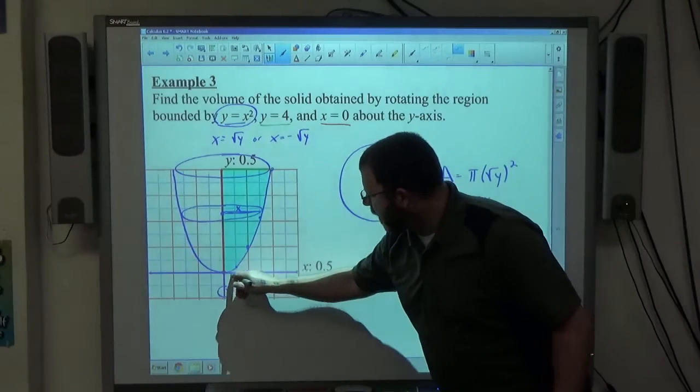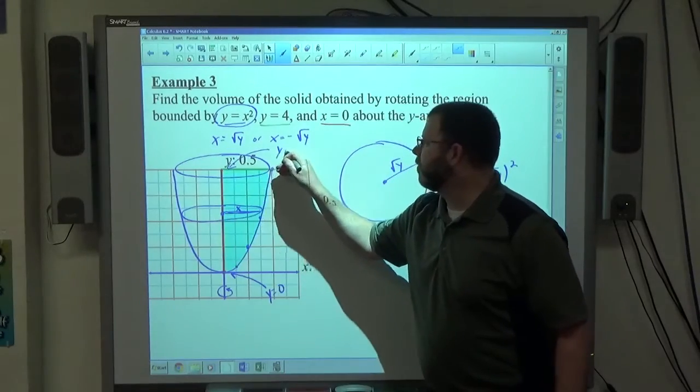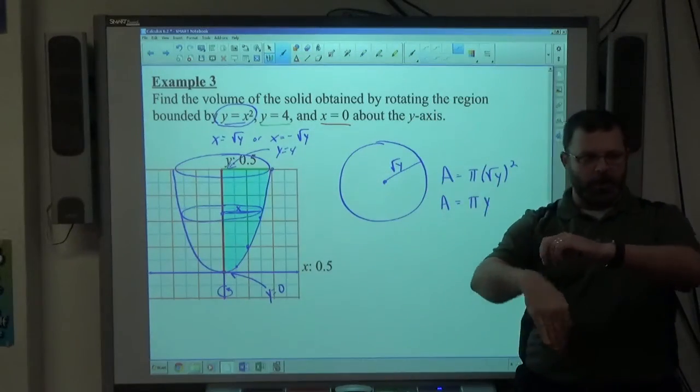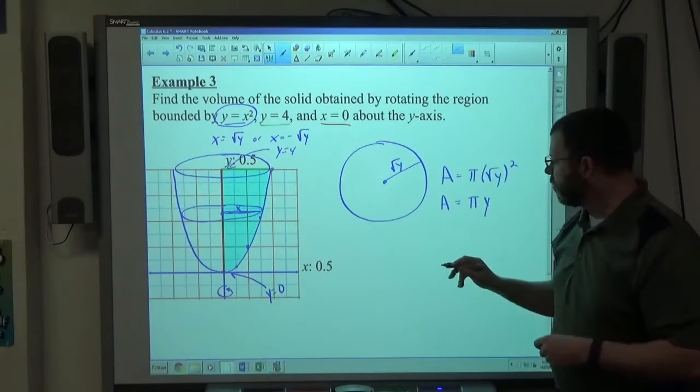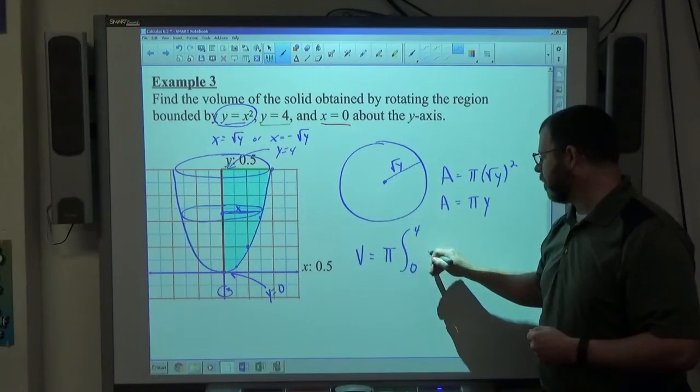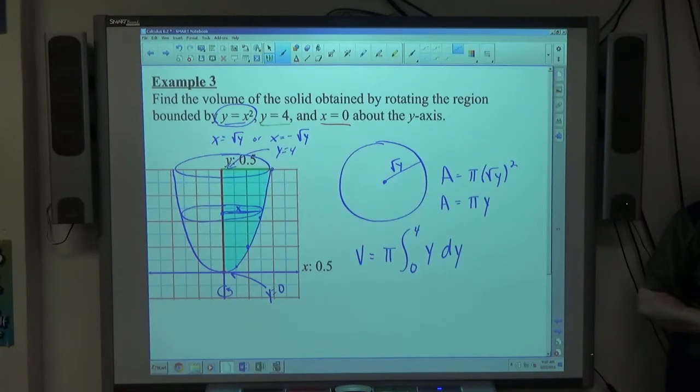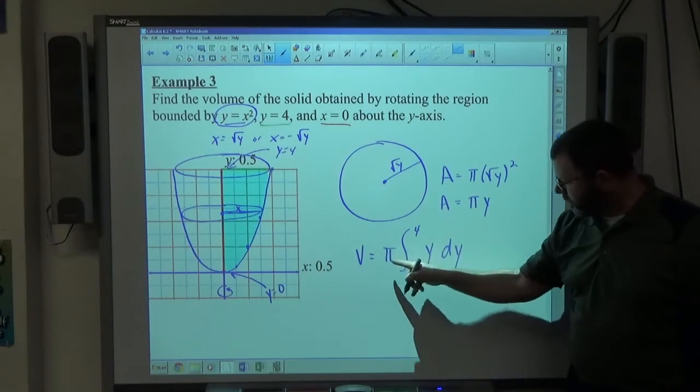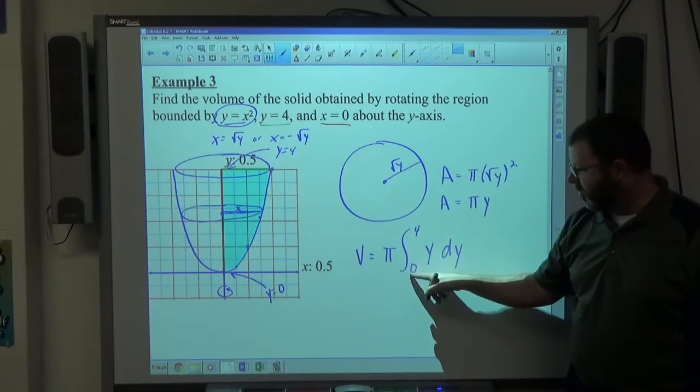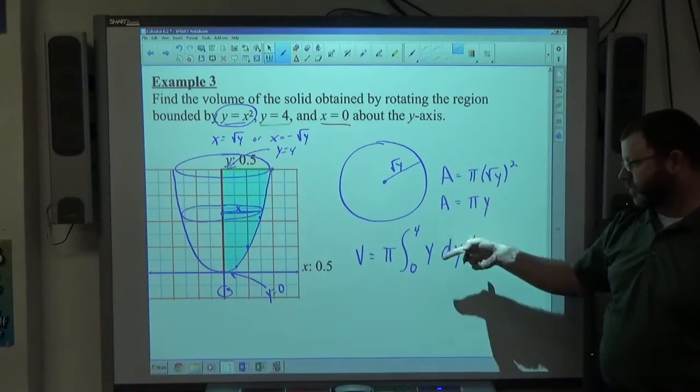The bottom of the region is right there at y equals 0. The top is right here at y equals 4. So the circles begin at the bottom at 0, they end at 4. So my integral, my volume, is going to be the integral from 0 to 4 of pi y dy. I like to take the pi out of the integral just so I'm just integrating one less thing to look at. Pi is a numerical value pulled out. 0 to 4 is our interval for y starting at 0 going to 4, and our area of our cross section is y, dy.